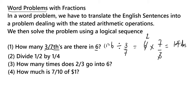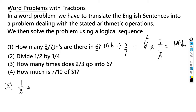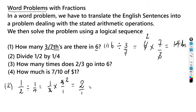Now let's look at number two. It says divide one-half by one over four, so we have one over two divided by one over four. We flip the right side when dividing, so we get one-half multiplied by four over one. Two goes into four two times, so we end up with two over one, which is just two. Two is the answer.